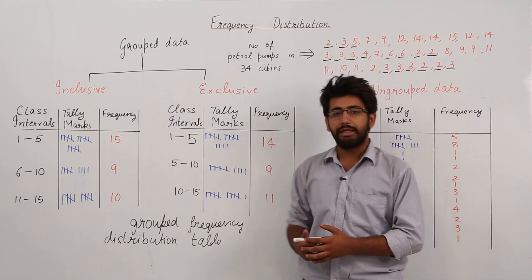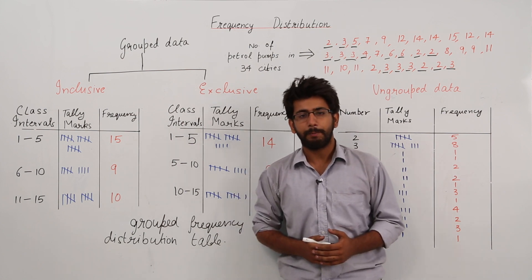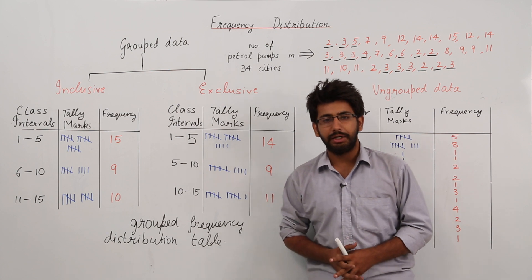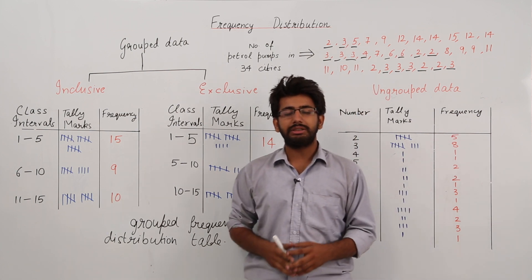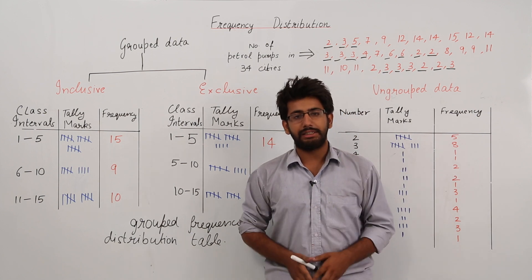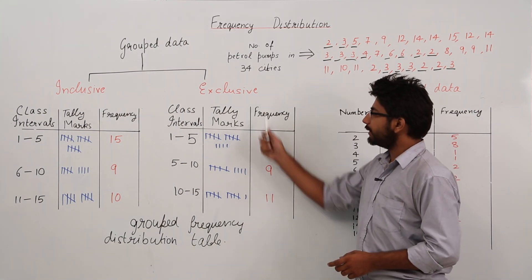Now before we learn in depth what is inclusive and what is exclusive, first let us discuss what are class intervals. Class intervals are actually the groups into which the raw data is condensed. For example, if you look at this table, the exclusive frequency distribution table, what are the class intervals?